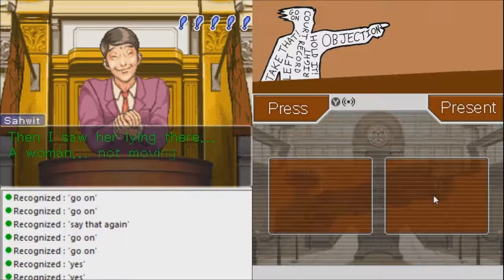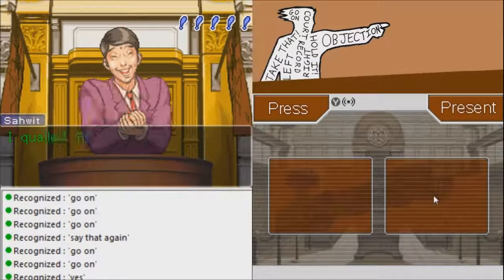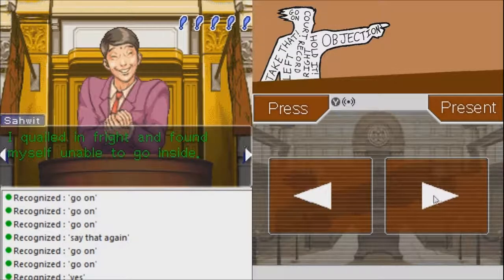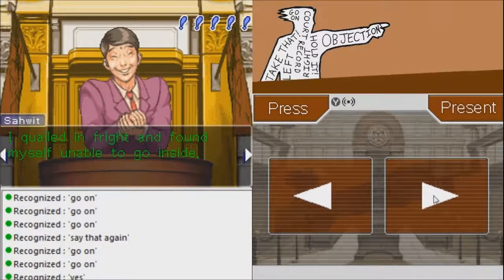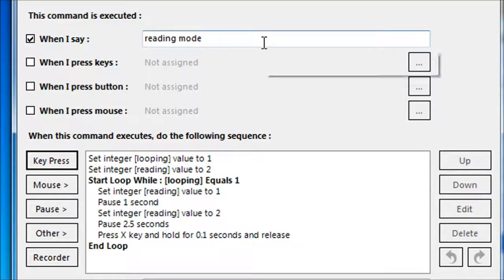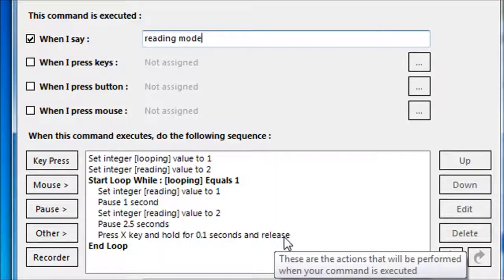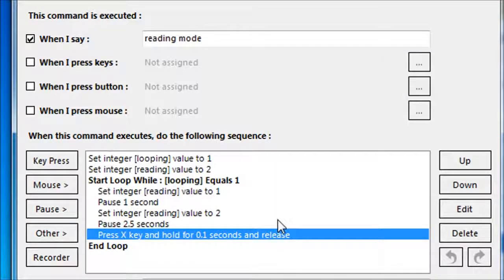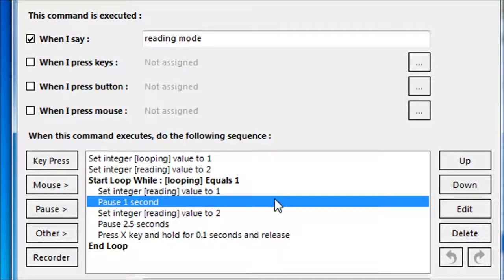In court it helps to have natural responses for the witnesses, such as go on and say that again for moving through bits of testimony. The most useful thing to add is a reading loop, along the same lines as the automated page turning I've made, which sends the appropriate button, the letter X, to the computer every 3.5 seconds, which is enough time to read each bit of dialogue.